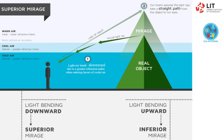Superior mirages occur when the air below the line of sight is cooler than the air above it. This unusual arrangement is called a temperature inversion, since warm air above cold air is the opposite of the normal temperature gradient of the atmosphere during the daytime. Superior mirages are quite common in polar regions, especially over large sheets of ice that have a uniform low temperature.